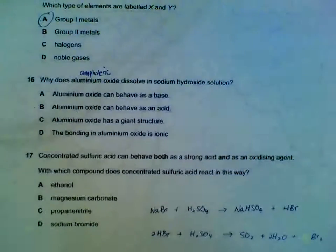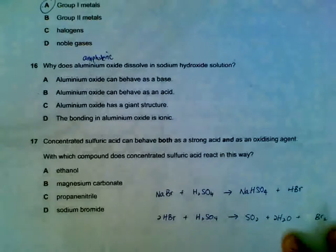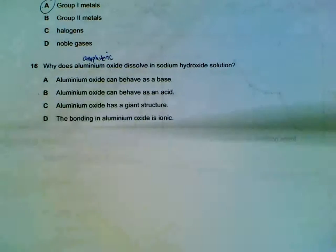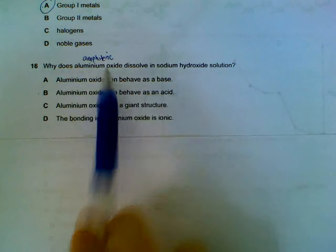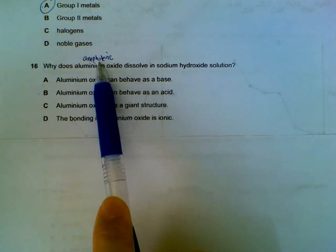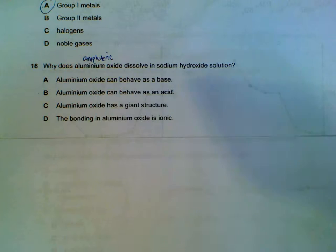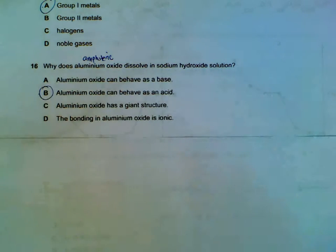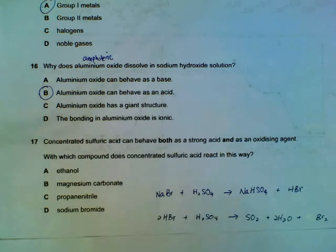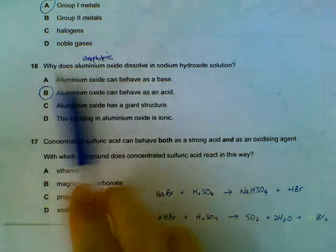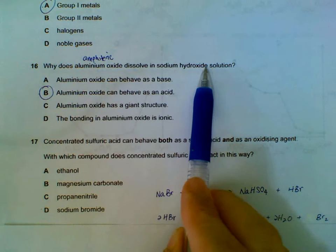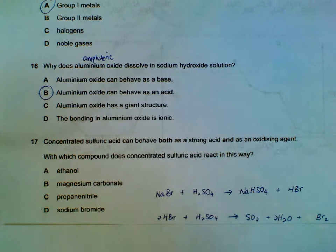Number 16, why does aluminum oxide dissolve in sodium hydroxide? Now, aluminum oxide is amphoteric. When it reacts with an alkali, it is behaving like an acid. If the question says, why does it dissolve in an acidic solution, then it is actually behaving like a base in that instant.